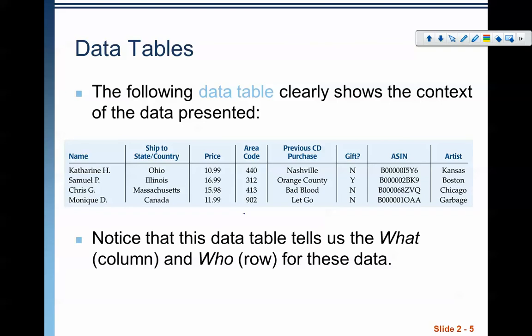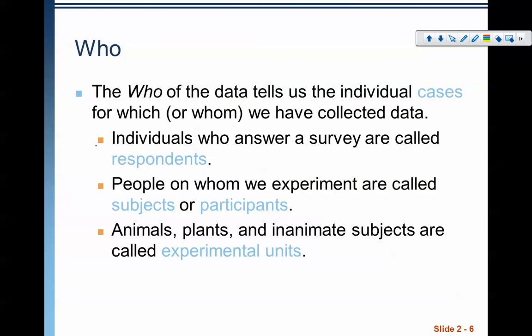We have a data table here. We can see from this data table the who and the what. Here's my whos—those are the rows. Everything over here on the right is information about the who. So Catherine H was shipped to Ohio, what she bought was this price, the area code was this, her previous CD purchase was Nashville. This is all information about Catherine H. So the who in this case is the row. The what information is up here—these up here are the variables measured.